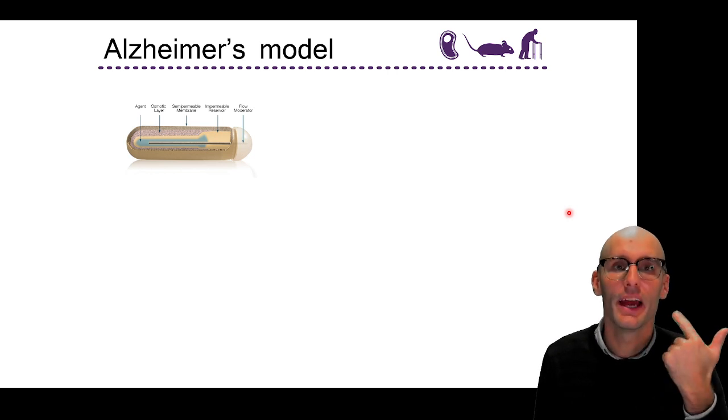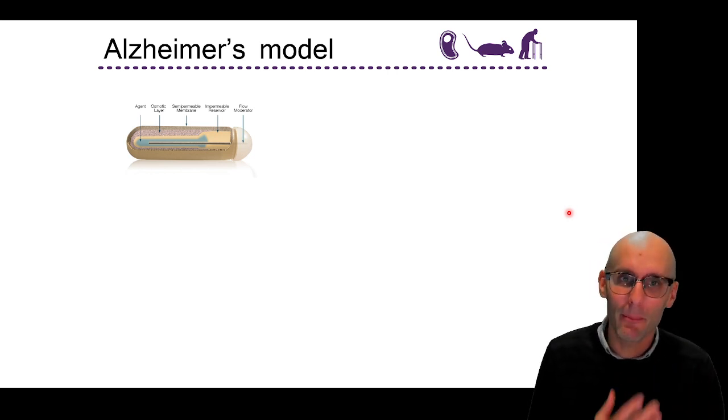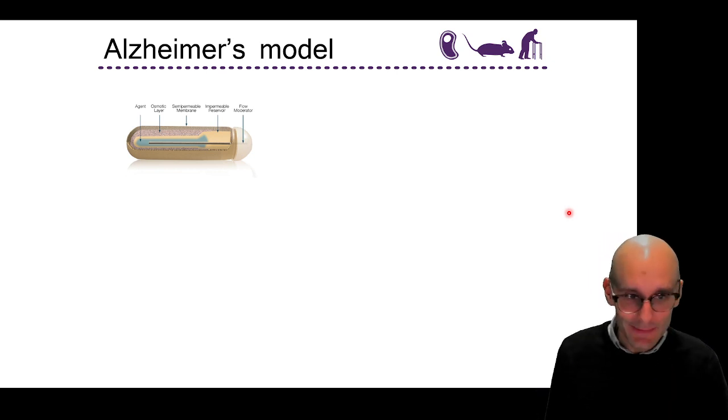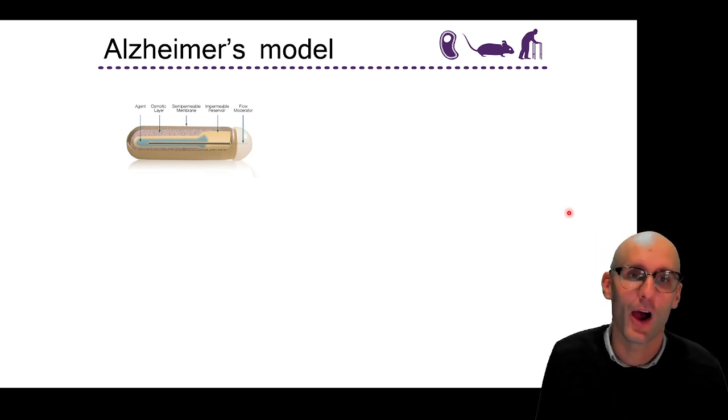But a pro is that this animal gets all the histological hallmarks of Alzheimer's disease. It gets neuronal loss, tau tangles, amyloid and inflammation. Whereas the amyloid based models typically just get amyloid pathology, inflammation, and they don't get neuronal loss or tau tangles. So you get all the histological hallmarks with this mouse model, but it's kind of artificial because you have this weird tau mutation in there. Anyway, so that's the mouse model. It's called three times TG Alzheimer's mouse model.